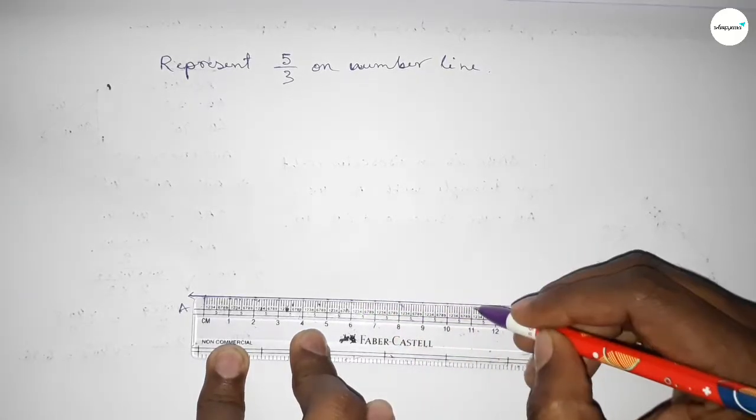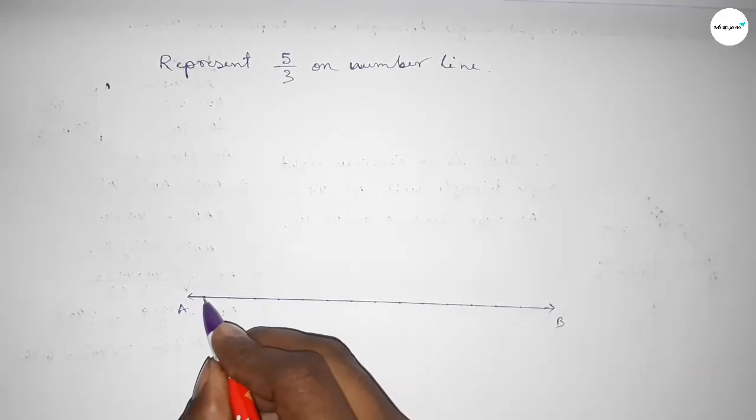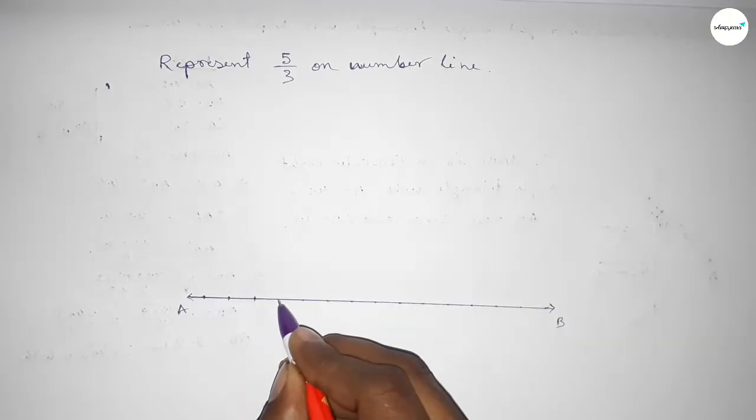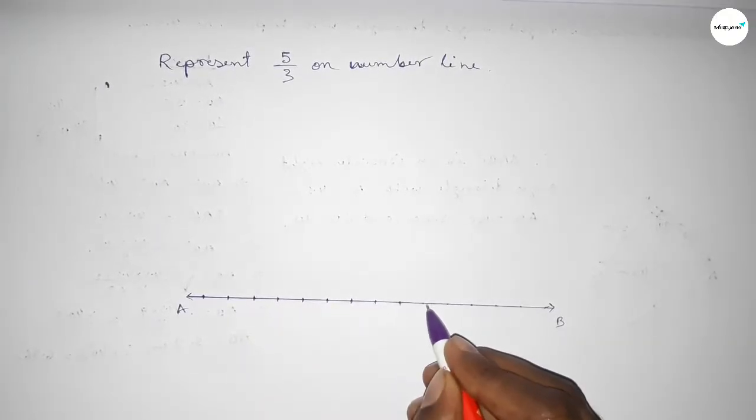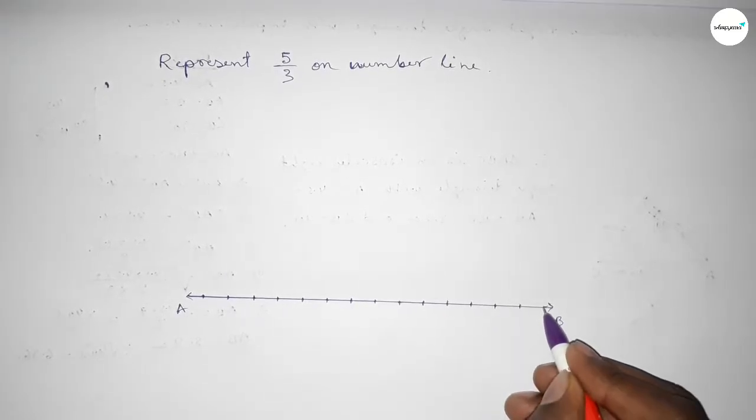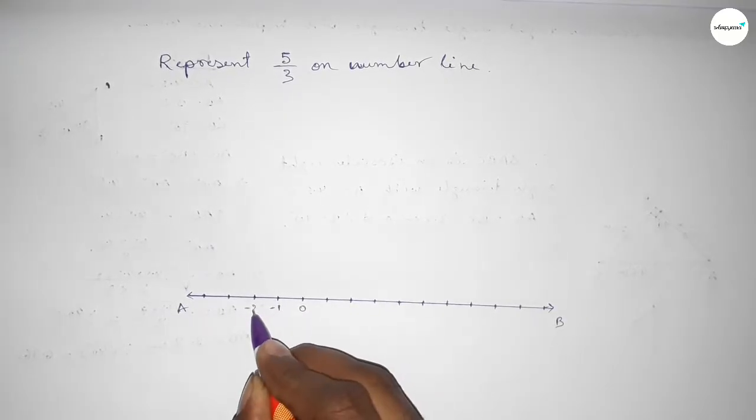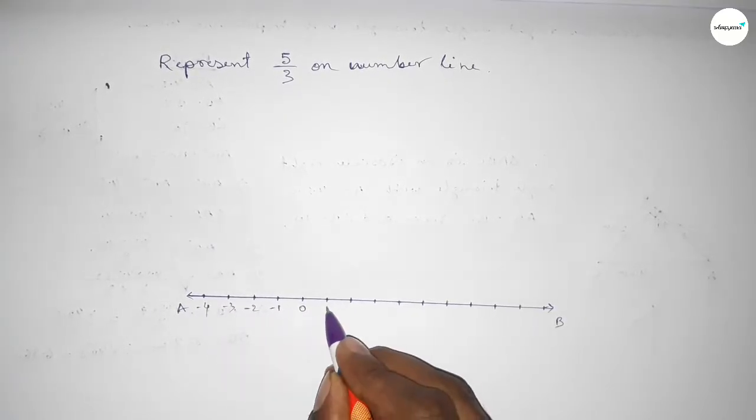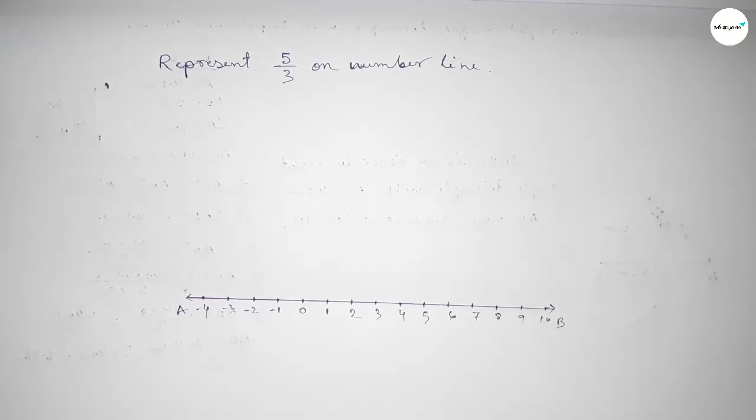Mark the numbers with deep color to understand perfectly. So marking the numbers on the line, starting from zero: this side minus 1, minus 2, minus 3, minus 4, and this side 1, 2, 3, 4, 5, 6, 7, 8, 9, 10.